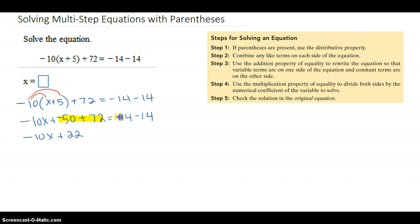I'm going to combine those together to get negative 50 plus 72 is positive 22. I'm going to do the same thing on the right: negative 14 minus 14. I'm going to combine those. Notice how I'm not undoing it; I'm just simplifying each side.